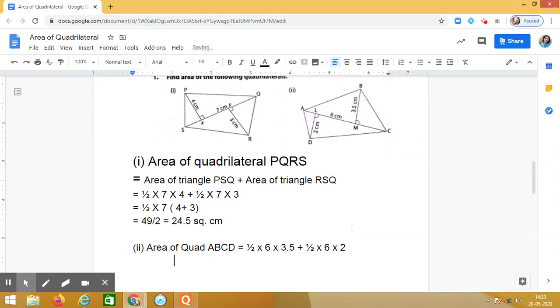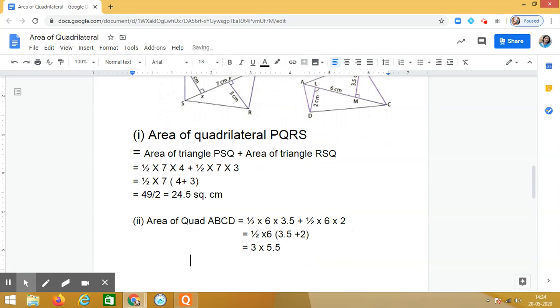6 into 2. Simplify this expression, so this will be equal to half into 6, take common, this is 3.5 plus 2. So this gives me 3 into 5.5, so that is the final answer is 16.5.